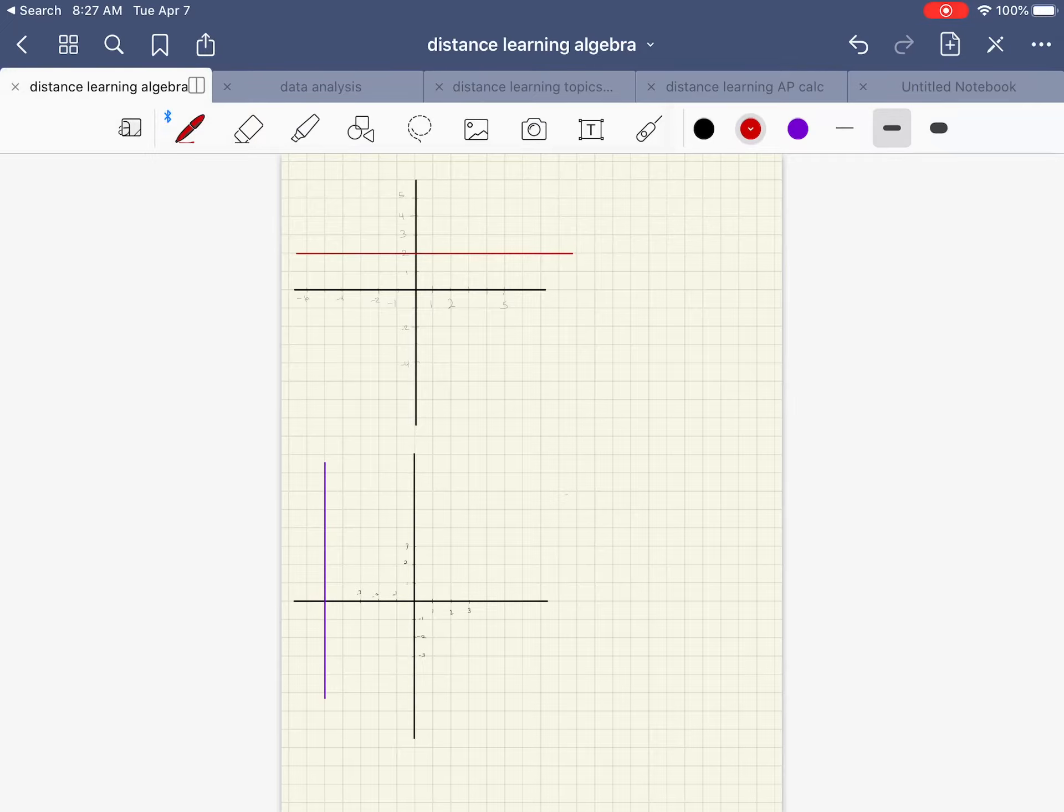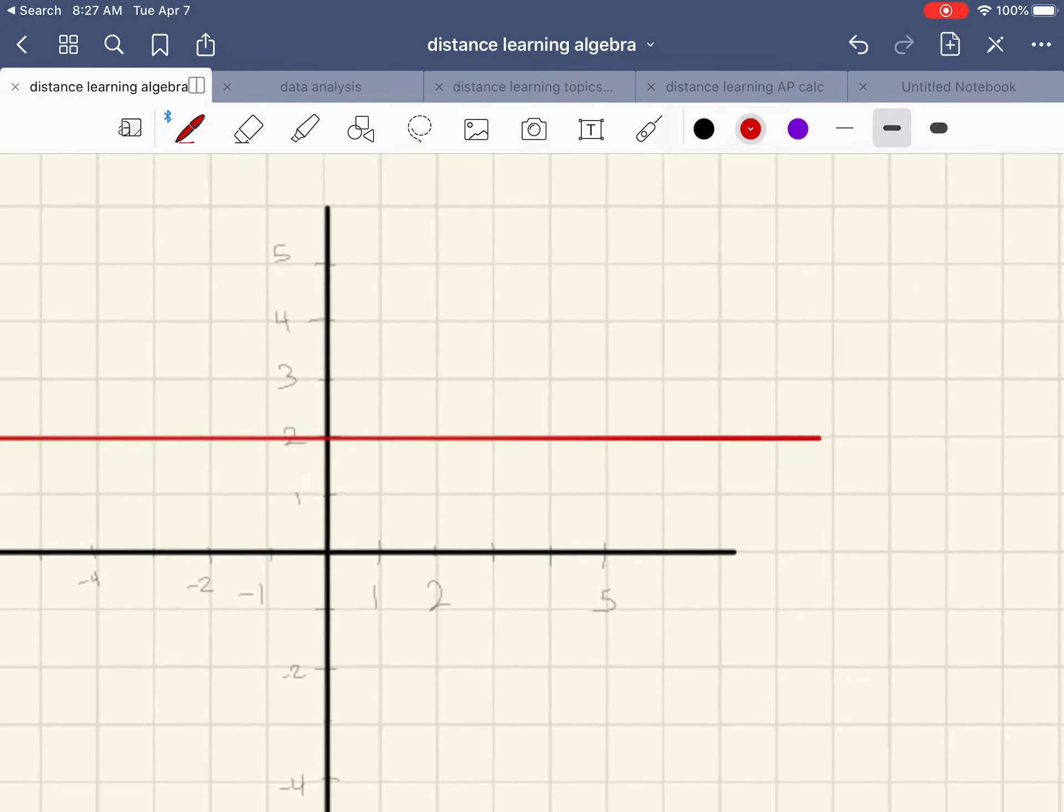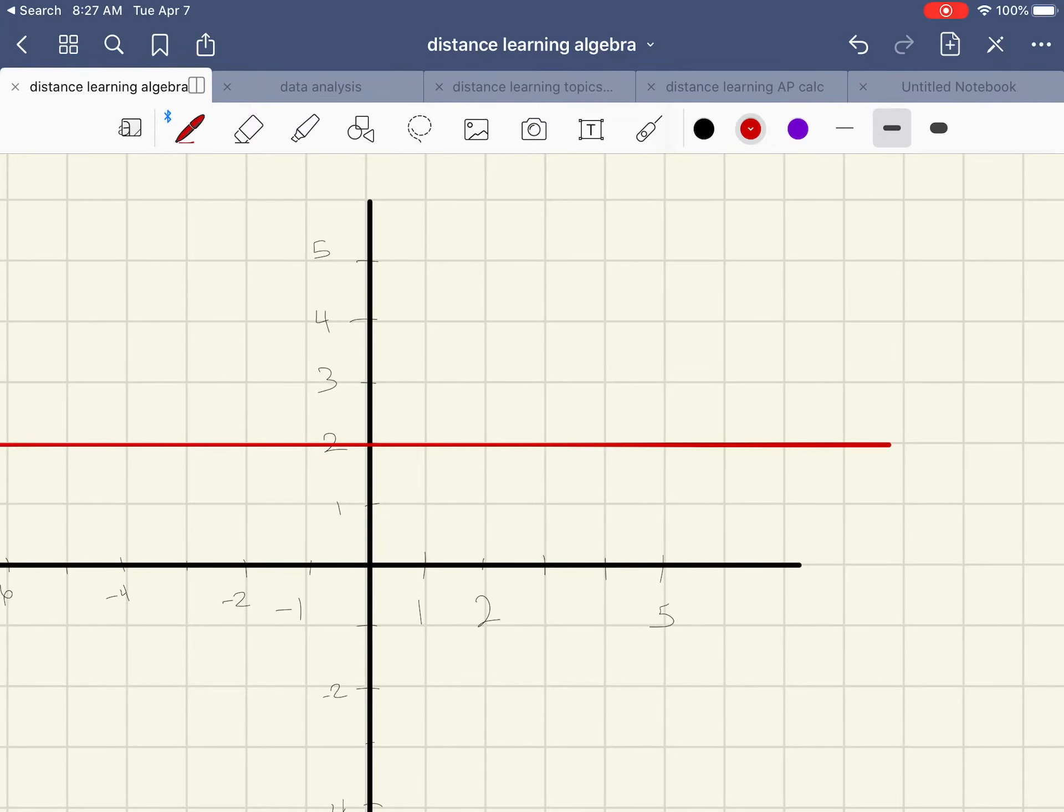This is a video on how to write equations for horizontal and vertical lines. Let's start on the top. We have a horizontal line. All horizontal lines will be y equals whatever the y-intercept is, so in this case two.